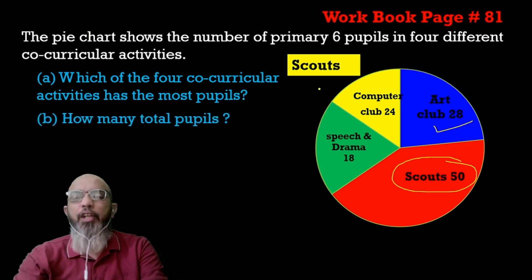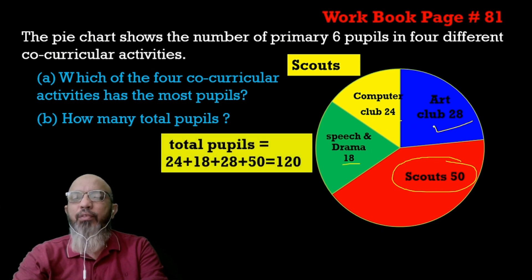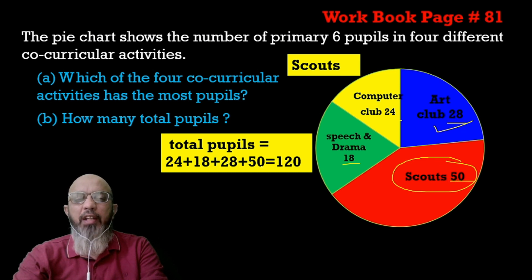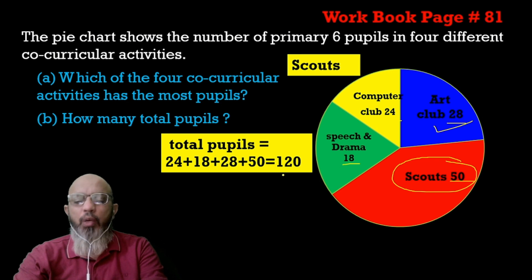The next question is: how many total pupils are there? We simply add all the numbers: 18 plus 24 plus 28 plus 50, and we get 120. So the total number of pupils in that class is 120.